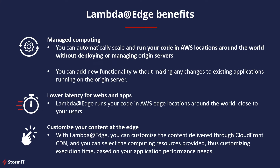The benefits of Lambda at Edge include simple and managed computing at the edge. You can automatically scale and run your code in AWS locations around the world without deploying or managing any servers. You can add new functionalities without making any changes to existing applications running on the origin server — for instance on S3 or EC2 instances. You get lower latency because Lambda at Edge runs your code at AWS Edge locations, not in the regions themselves. You can also customize the content delivered through CloudFront CDN based on your application performance needs.